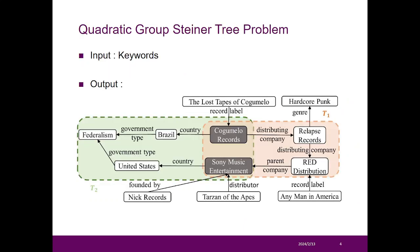More detail: the quadratic group Steiner tree problem takes several keywords as inputs, and as shown in the figure, its output is a subgraph related to all keywords with minimum quadratic cost.